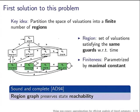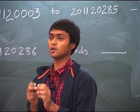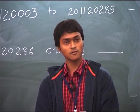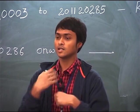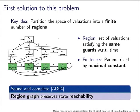What do Alur and Dill say? They take some constant from the automaton and partition this infinite space into a finite number of regions. Within two valuations from the same region you can play the same set of paths, so there is no point distinguishing them. Once you define these regions, you take a cross product with the states of the automaton and build the region graph. The region graph is sound and complete with respect to reachability.